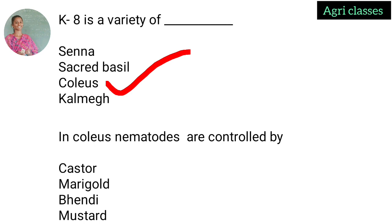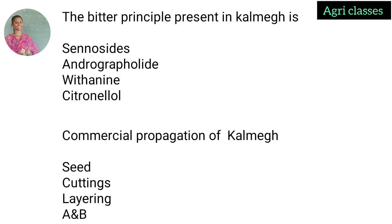In Coleus, nematodes are controlled by castor, marigold, bendi, and mustard as the main companion crops. Next question: the bitter principle present in Kalmegh — options are sitoindosides, andrographolide, withaferin-9, or citronella. The correct answer is andrographolide. Andrographolide is the bitter principle found in Kalmegh.